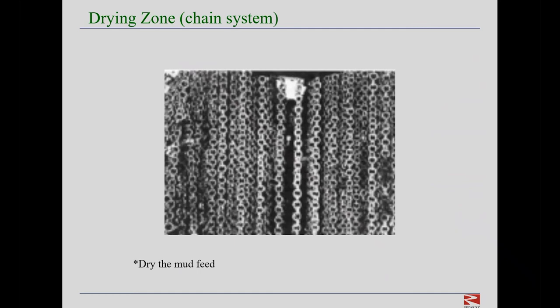In the drying zone, chains are attached to the kiln shell using metallic hangers. The purpose of the chains is to recover heat from the kiln exhaust gases and dry the mud feed. Current thinking is that the chain system design is a science of balance. Increasing the chain density — that is, the total surface area of chains divided by the volume of the kiln — always reduces the specific fuel consumption. So the more chain you have, the more heat exchange you get inside the kiln. Interestingly, a kiln fired with fuel oil requires nearly 50% more chain than one fired with natural gas, and there is a point where the cost of installing additional chain exceeds any additional fuel savings.